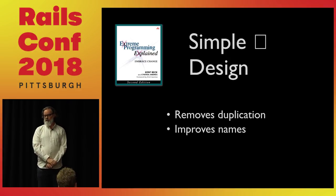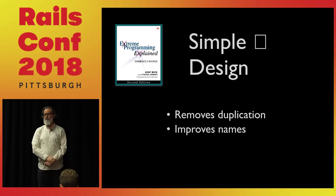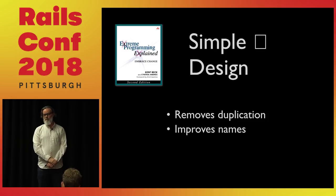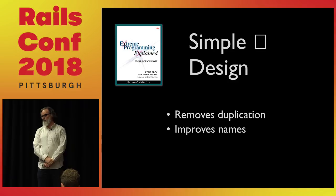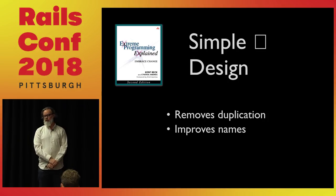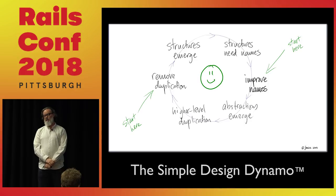Simple design from XP came out in 1999 in the second edition. Simple design has four practices: your design would be simple to the degree that it passes its tests, reveals intention, has no duplication, and has fewest elements. I would say you can use just these two concepts and get 95% of simple design: remove duplication and improve names. Assuming you're doing TDD and all your tests are passing, what you're really trying to do is remove duplication — in other words, reveal intention primarily by removing duplication — and improve names. That gets you most of the benefits. Someone called JB Rainsberger wrote a really great diagram about this.